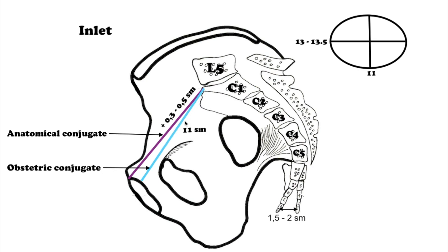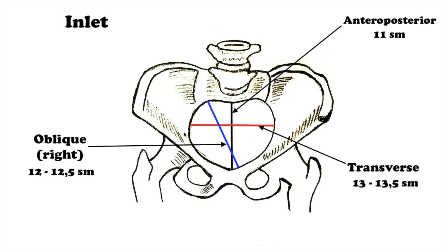There is also the anatomic conjugate, conjugata anatomica — the distance from the promontory of the sacral bone to the upper margin of the symphysis — which is 0.3 to 0.5 cm larger than the obstetric one. The transversal dimension, the distance between the utmost points of the arcuate lines of the ilia (linea innominata), equals 13 cm.